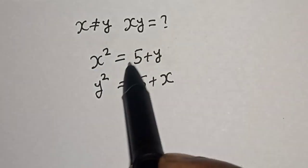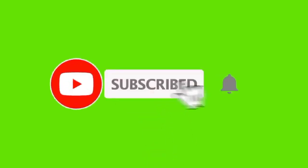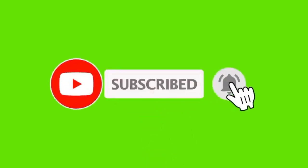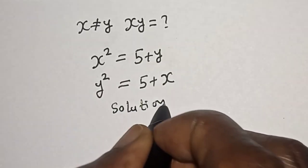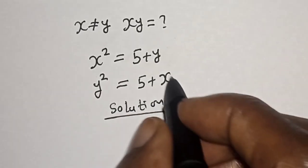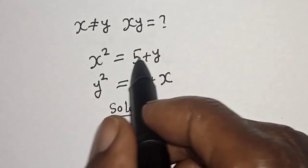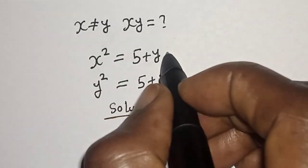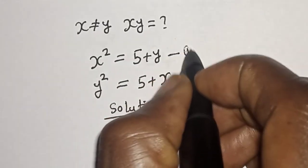But before we proceed, please don't forget to like, share, comment and subscribe. Solution. This is x square is equal to 5 plus y. Let's call this equation 1.